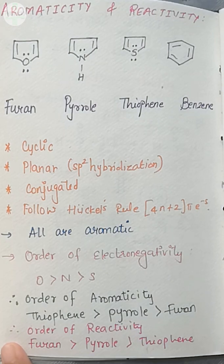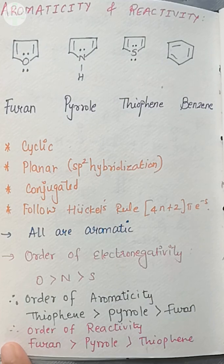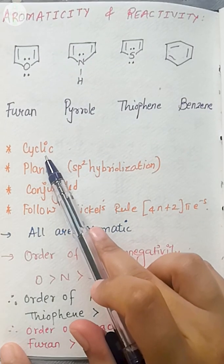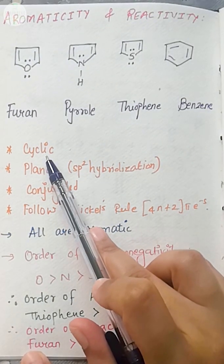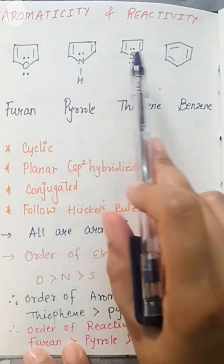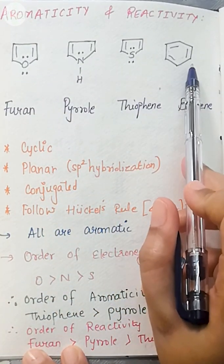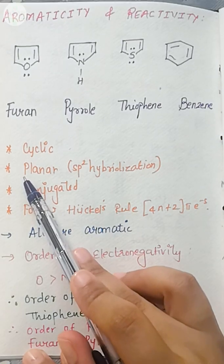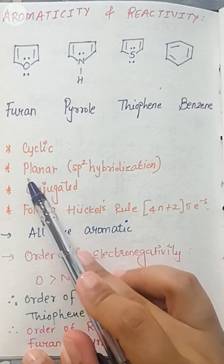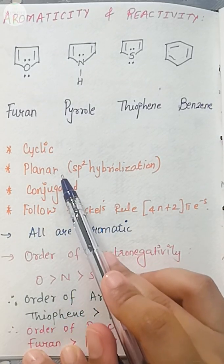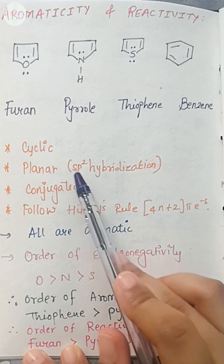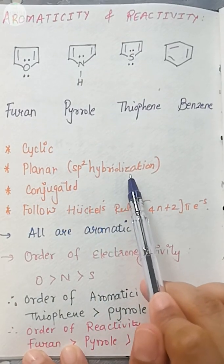Now, for any molecule to be aromatic, there are certain conditions. The first condition is that the molecules need to be cyclic. Here all the molecules you can see are cyclic. The second thing is that the atoms in the molecules need to be planar. The molecules need to be planar. The atoms need to be sp2 hybridized.